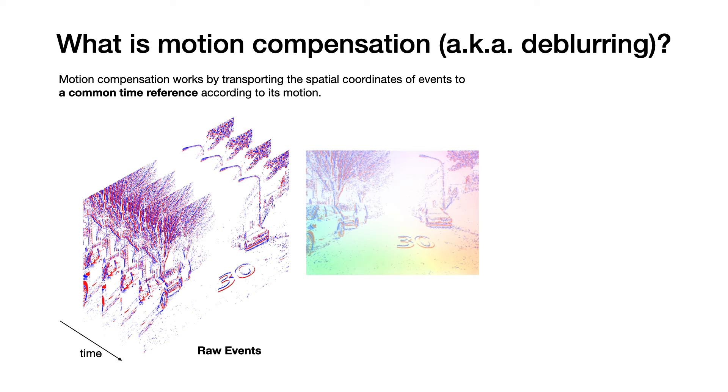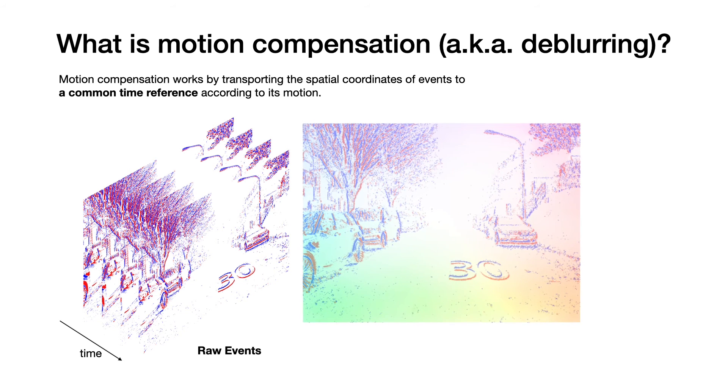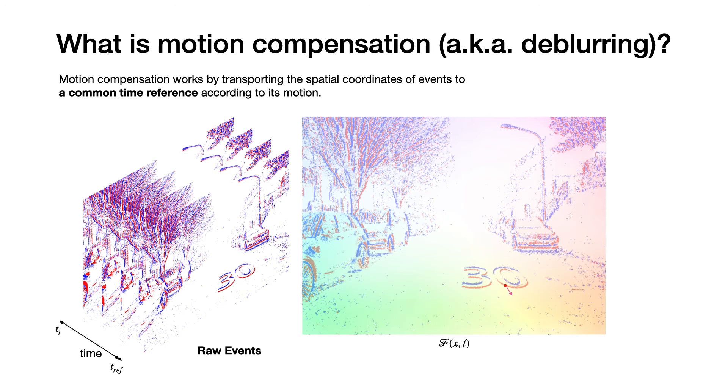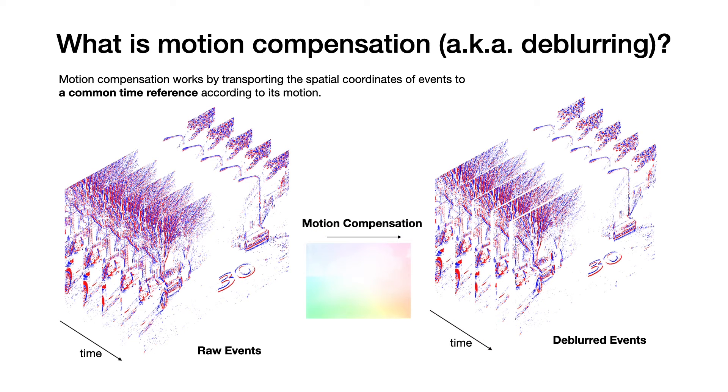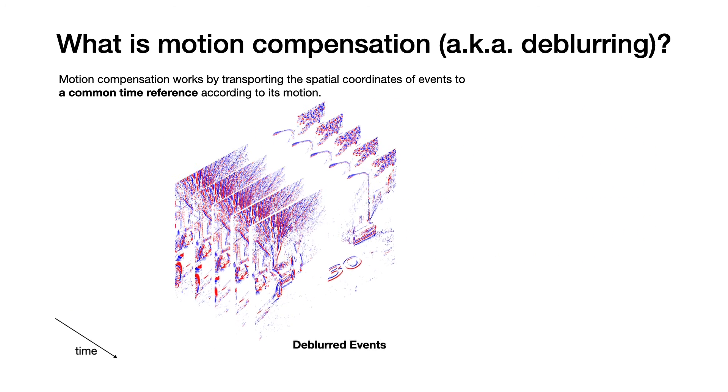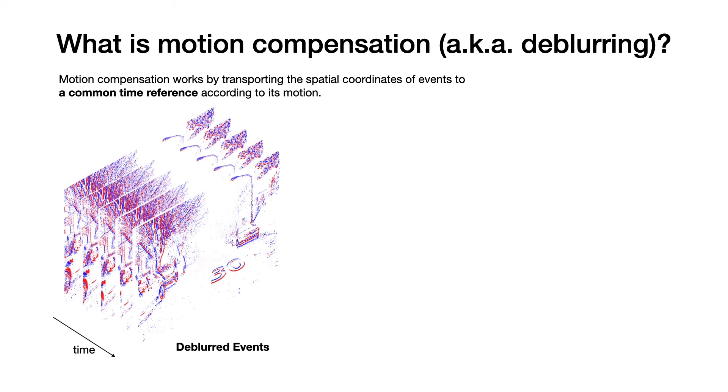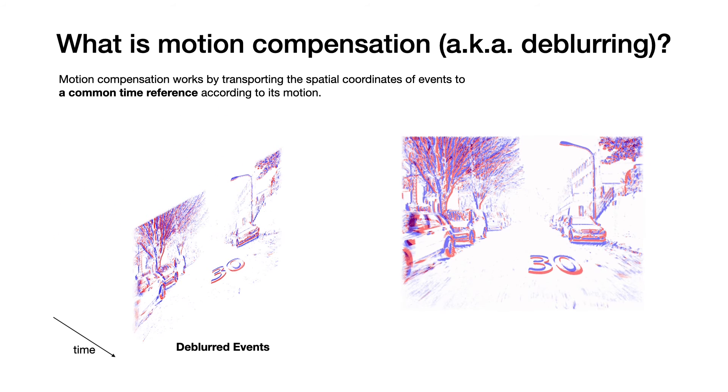Take this event bin as an example. We can transport the event coordinates using their optical flow vector and time difference from the reference time. This way, all event bins can be de-blurred to a common reference time. When collapsing de-blurred events, motion blur is significantly reduced.